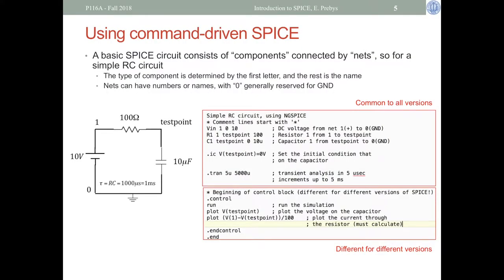Here's an example of the most basic type of command-driven SPICE simulation. The circuit has a 10-volt voltage source, a 100-ohm resistor, and a 10-microfarad capacitor, giving a time constant RC of 1,000 microseconds — one millisecond. I'm labeling the nets here; net name zero is reserved for ground. You always have to define a ground point in a SPICE simulation.